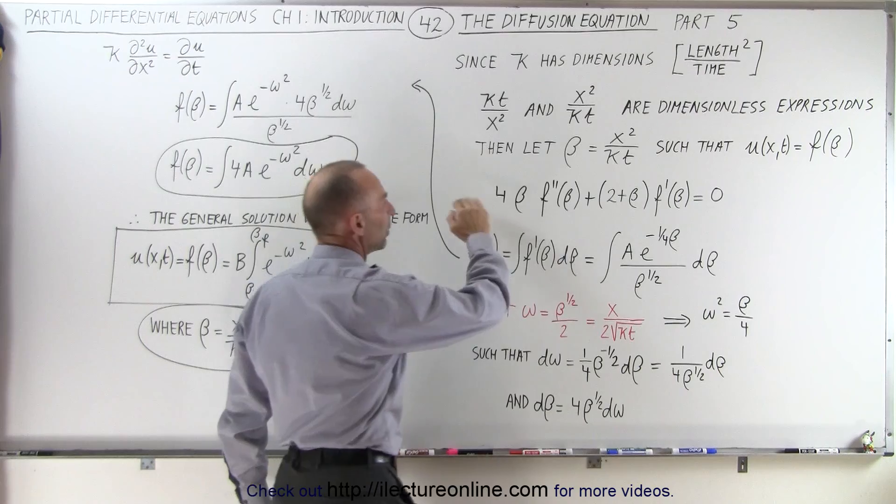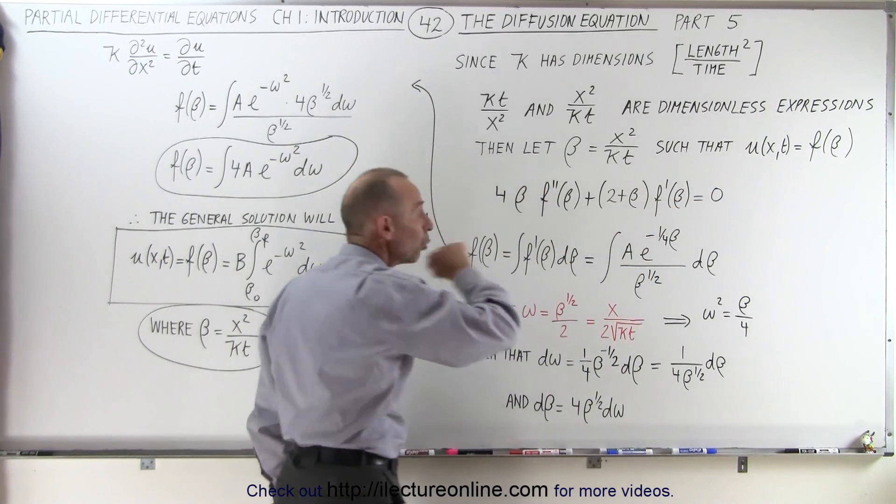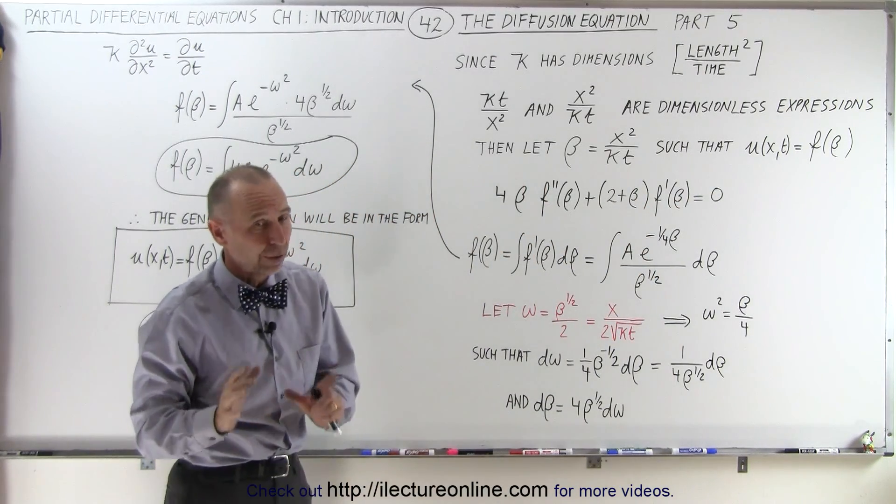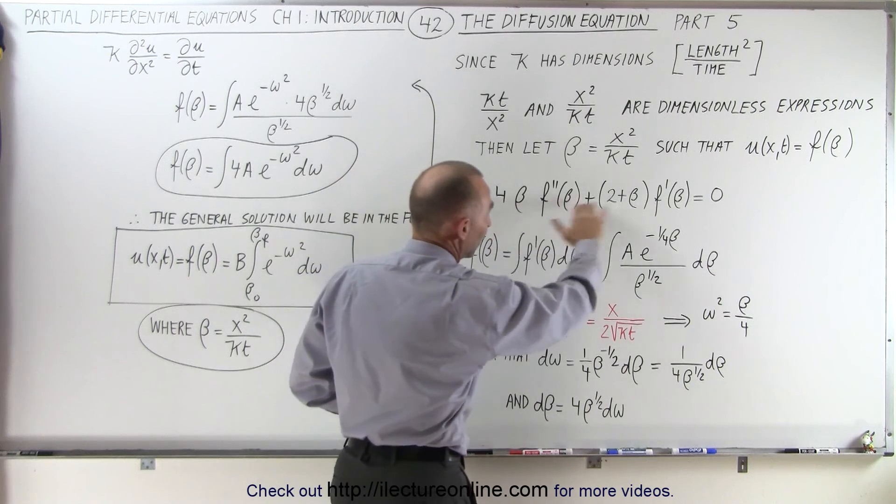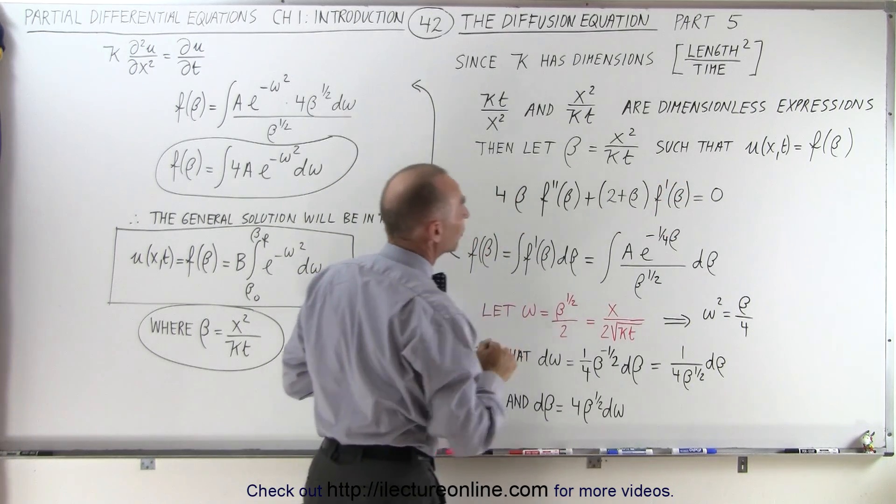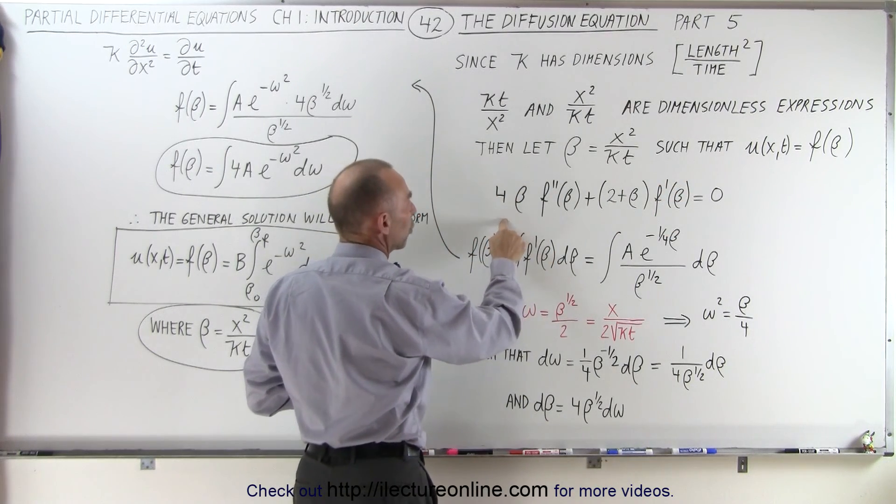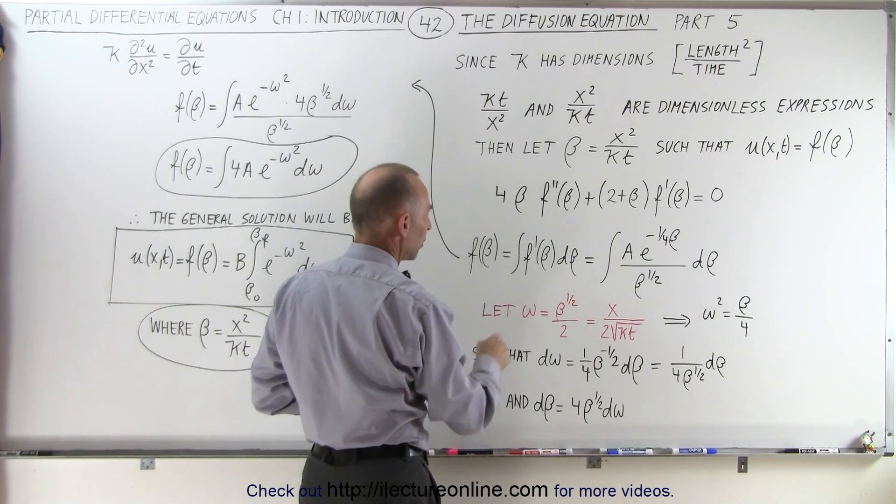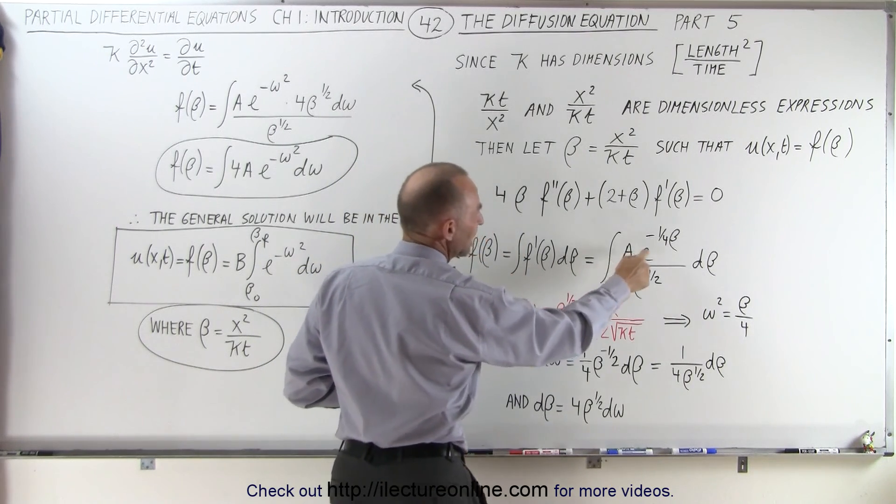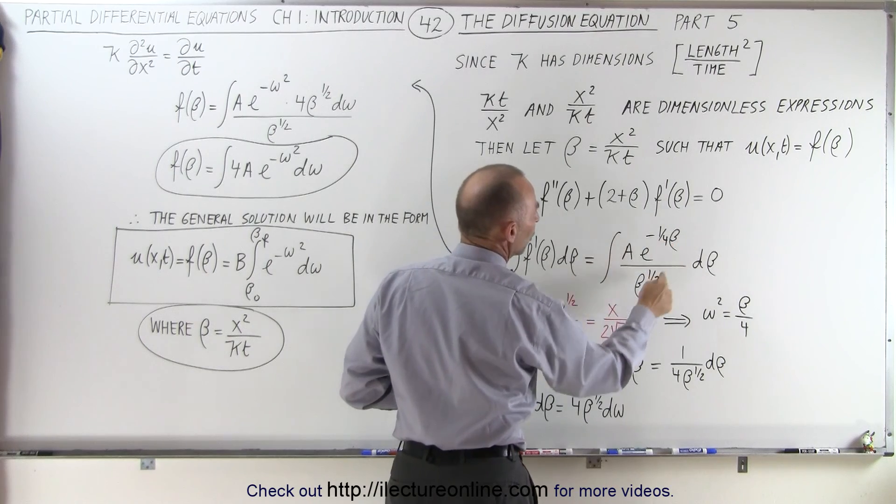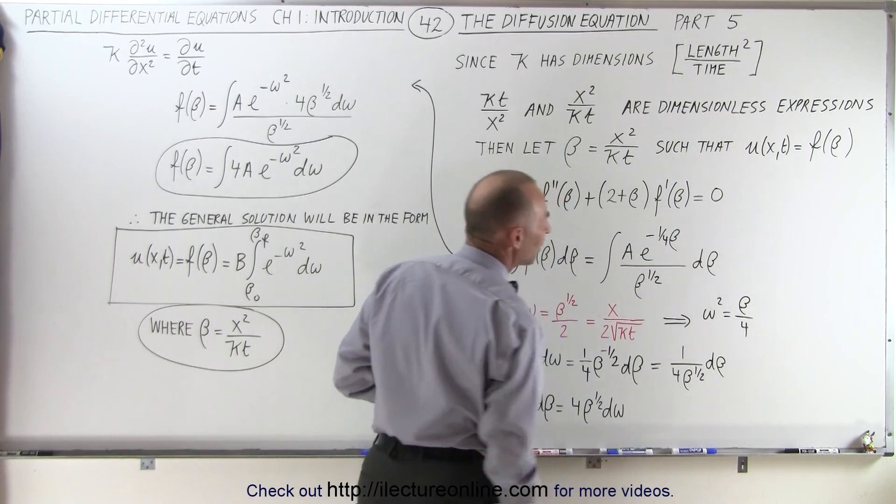We finally were able to come up with a differential equation, an ordinary differential equation, and if you want to see where that came from, we have several videos that did all the work before this. Then we tried to solve for that ordinary differential equation, and we end up with an integral that was a times e to the minus one quarter beta over beta to the one half times d-beta.